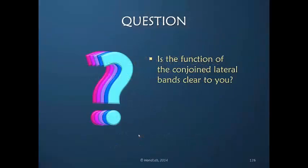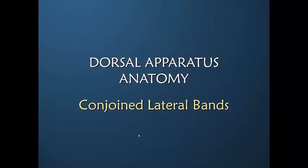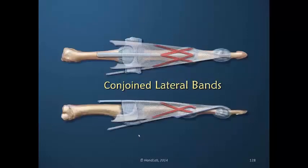Is the function of the conjoined lateral bands clear? We talked about the conjoined lateral bands connecting the central slip to the lateral bands and connecting the lateral bands to the central slip. The interconnection means that nothing goes very far without the neighbor coming along for the ride.